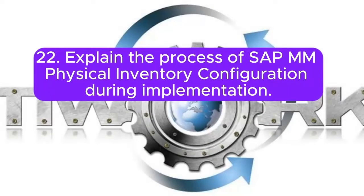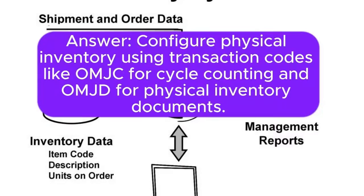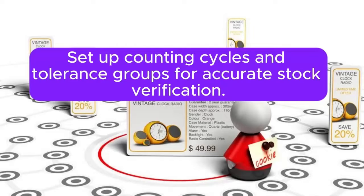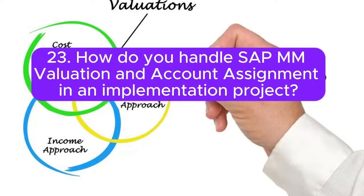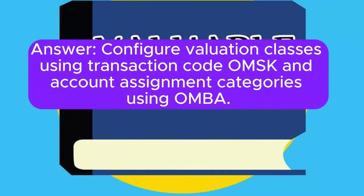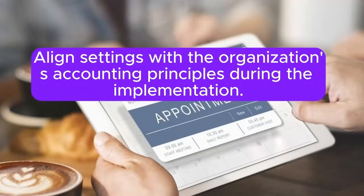Question 22: Explain the process of SAP MM physical inventory configuration during implementation. Answer: Configure physical inventory using transaction codes like OMGC for cycle counting and OMI4 for physical inventory documents. Set up counting cycles and tolerance groups for accurate stock verification. Question 23: How do you handle SAP MM valuation and account assignment in an implementation project? Answer: Configure valuation classes using transaction code OMSK and account assignment categories using OMBA. Align settings with the organization's accounting principles during the implementation.